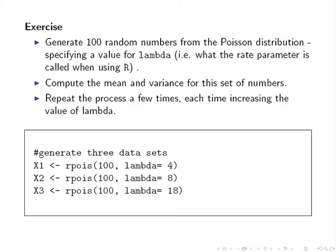Here I have at the bottom of the slide some R code. What I do here is I have three data sets, each with 100 observations. And we are going to randomly generate 100 Poisson observations: 100 with lambda equals 4, 100 with lambda equals 8, and 100 with lambda equals 18. We're going to call these data sets X1, X2, X3.